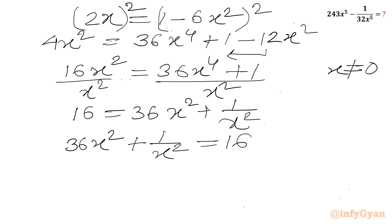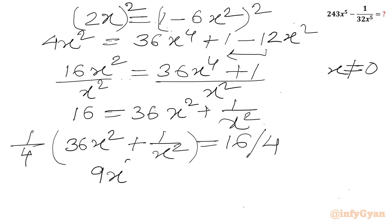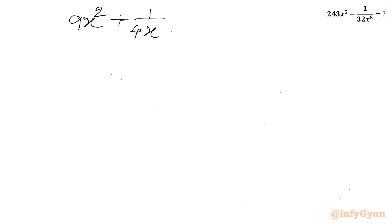Now I will divide this equation by 4, writing 1 over 4 on both sides, which gives us 9x² + 1/(4x²) = 4.